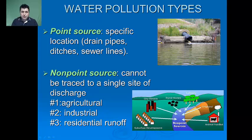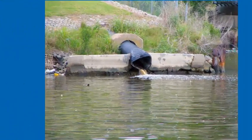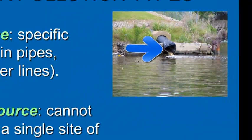Water pollution, like most pollutants, can be classified as two major types: point source or non-point source. Point source pollutants come from specific locations like a drain pipe, a ditch, or a sewer line. You can point to it — you can identify that single source.